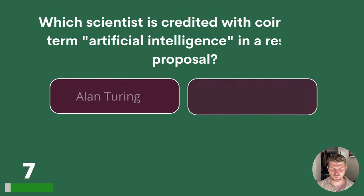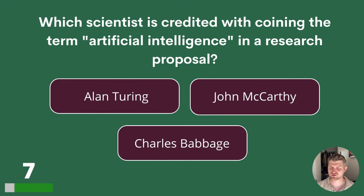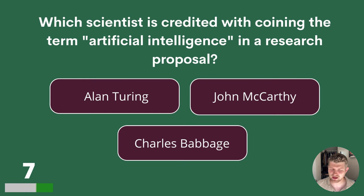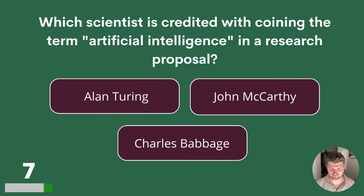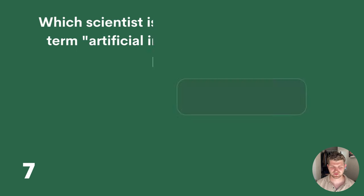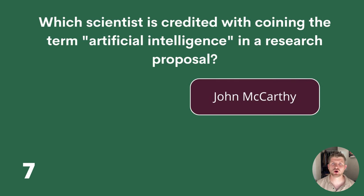Question 7. Which scientist is credited with coining the term artificial intelligence in a research proposal? Alan Turing, John McCarthy or Charles Babbage? The answer is John McCarthy.